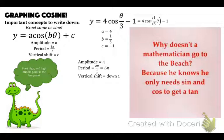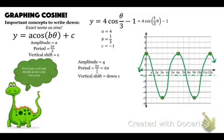Why doesn't the mathematician go to the beach? Because he knows he only needs sine and cosine to get tangent — since sine over cosine equals tangent. Please reach out if you need help. I've put some other links you can click to that will also help if this video wasn't enough.